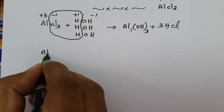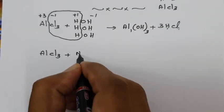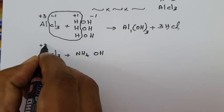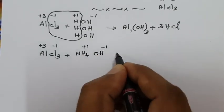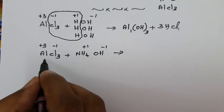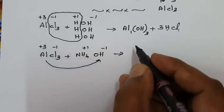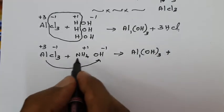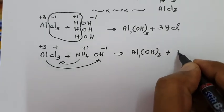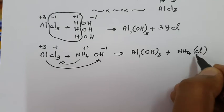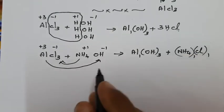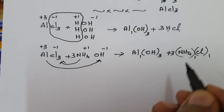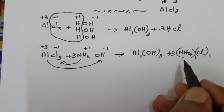Second property: AlCl₃ reacts with Ammonium Hydroxide (3 molecules). Aluminium is 3+, Cl is −1, NH₄⁺ is +1, OH is −1. By double decomposition, Al³⁺ combines with OH⁻ to give Aluminium Hydroxide (valency 3 and 1), and NH₄⁺ combines with Cl⁻ to give Ammonium Chloride. Balanced: 3 OH, 3 Cl, giving Aluminium Hydroxide and Ammonium Chloride.